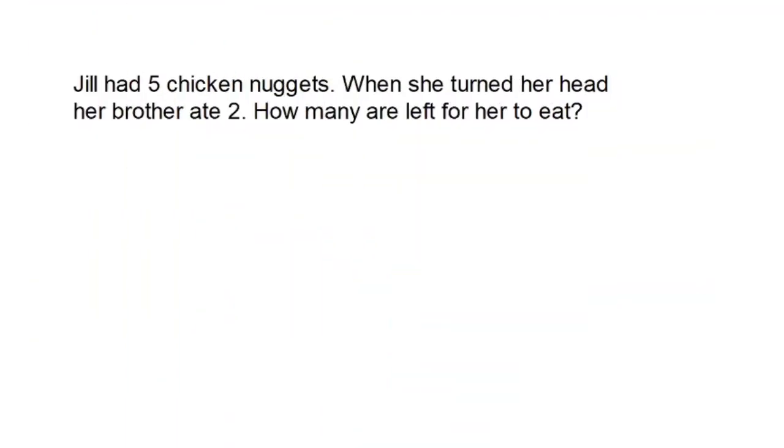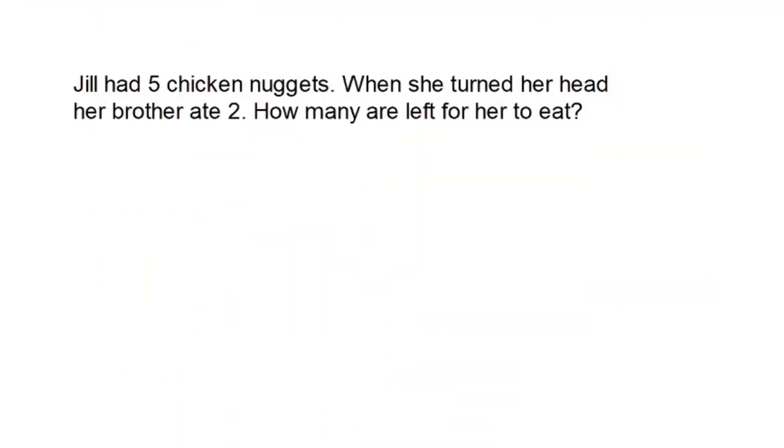Let's see if you can solve this problem. This one has a little twist to it. Here's a problem for you and remember there's a little twist here. It says Jill had five chicken nuggets. When she turned her head, her brother ate two. Sneaky little kid that he is. How many are left for her to eat? All right, hit pause. Solve the problem. I'll be here when you're ready and we'll see how you did.